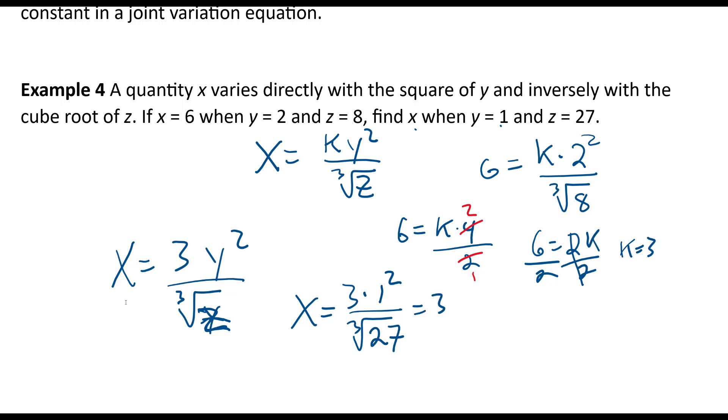That's going to be 3 times 1 over the cube root of 27, which is 3. So the 3s divide out, and it looks like our x is just 1.